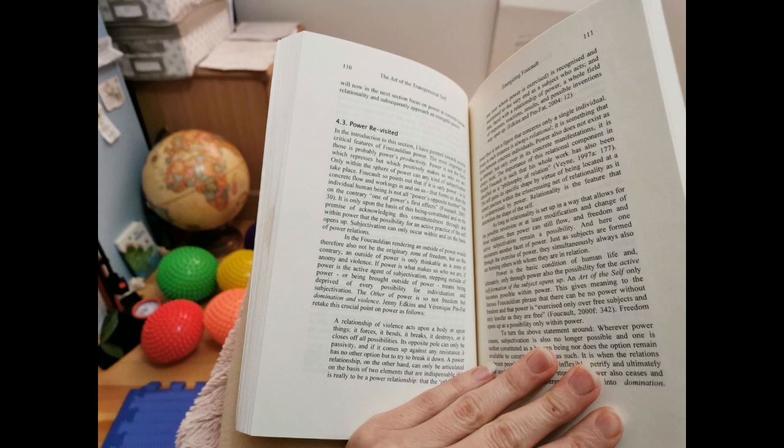Jenny Edkins and Veronique Pinfat retake this crucial point on power as follows. A relationship of violence acts upon a body or upon things. It forces, it bends, it breaks, it destroys, or it closes off all possibilities. Its opposite pole can only be passivity. And if it comes up against any resistance, it has no other option but to try to break it down.